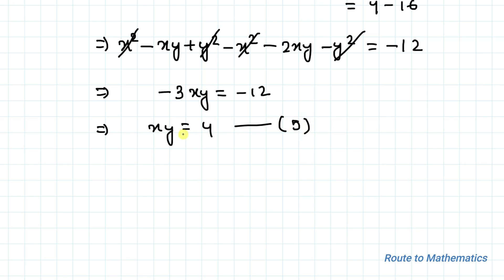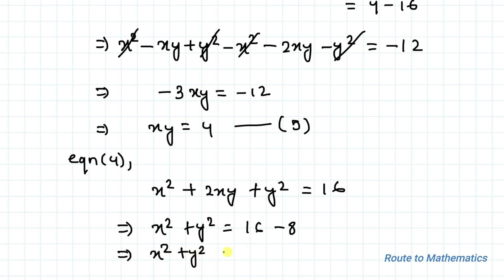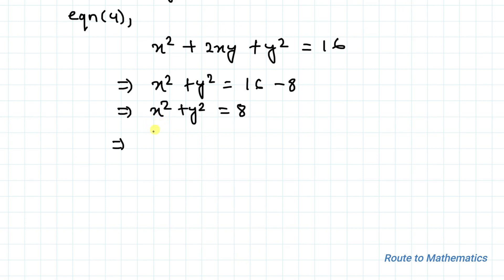Now putting the value of xy into equation 4: x squared plus 2xy plus y squared equals 16. Substituting xy equals 4, we get x squared plus y squared equals 16 minus 8, which gives x squared plus y squared equals 8.